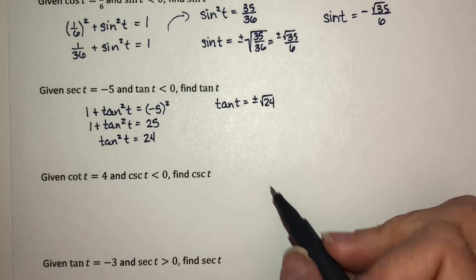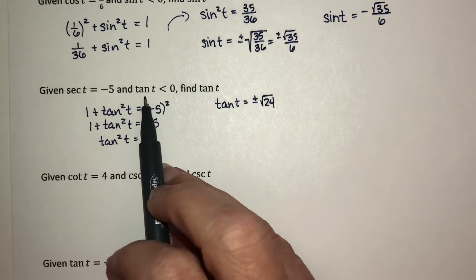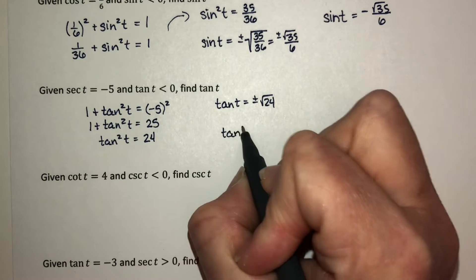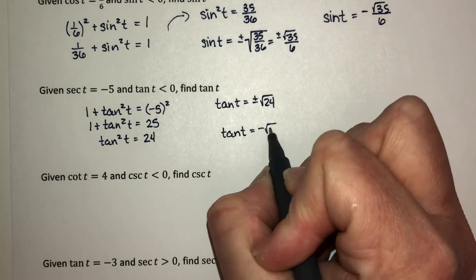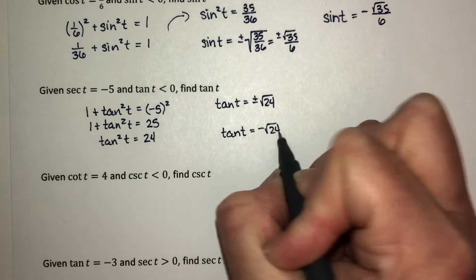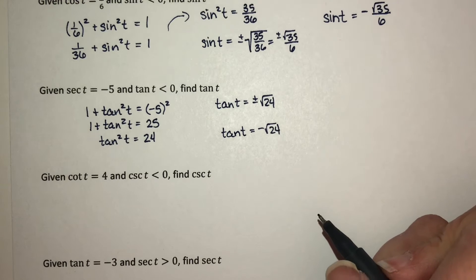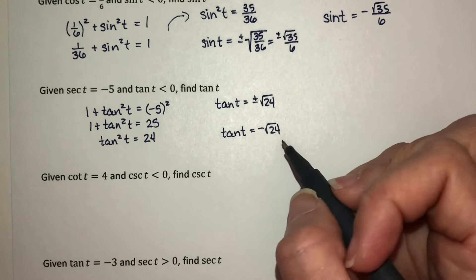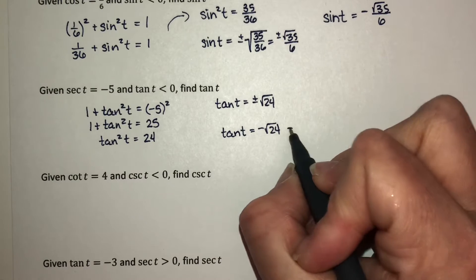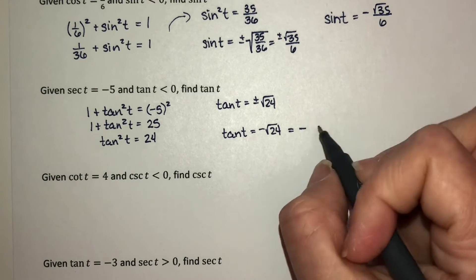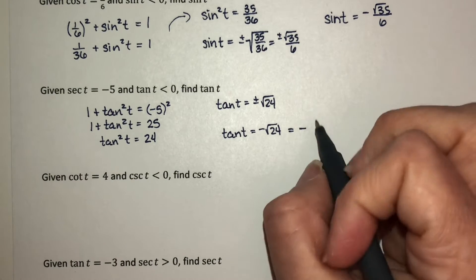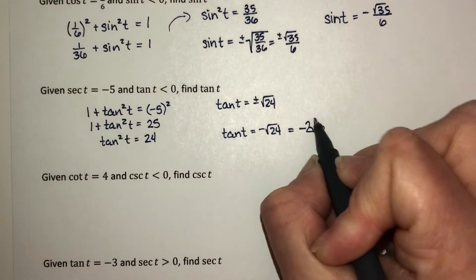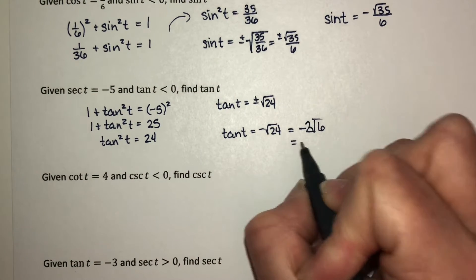Algebraically we have two options, and we want the negative answer. We should also write the radical in simplified form. The square root of 24 simplifies, so the answer is negative 2 square root of 6.